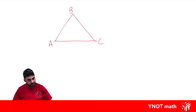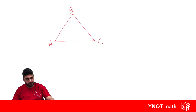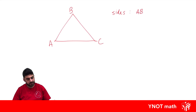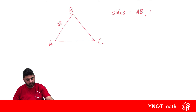This vertex here is labelled with an A, this vertex is labelled with a B, and this vertex is labelled with a C. We can call our sides using two of the vertices. So the side AB is the side that joins vertex A and vertex B. We also have BC and AC.